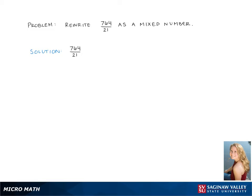Here we're going to write 764 over 21 as a mixed number. After rewriting the fraction, the first thing we'll do is perform long division, because that's what a fraction really means - dividing.